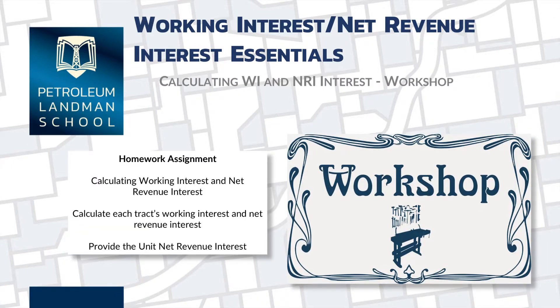This chapter is the course's workshop, and it allows you to calculate these interests using Subtract Interest and Net Tracked Acre Interest in the unit. It covers 18 tracts within a 640-acre tract of land in Oklahoma.